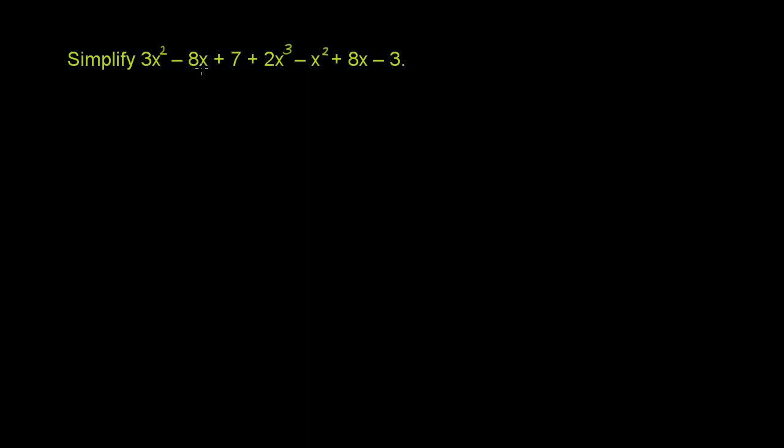Simplify 3x squared minus 8x plus 7 plus 2x to the third minus x squared plus 8x minus 3. When we simplify this, we're essentially just going to add up like terms.